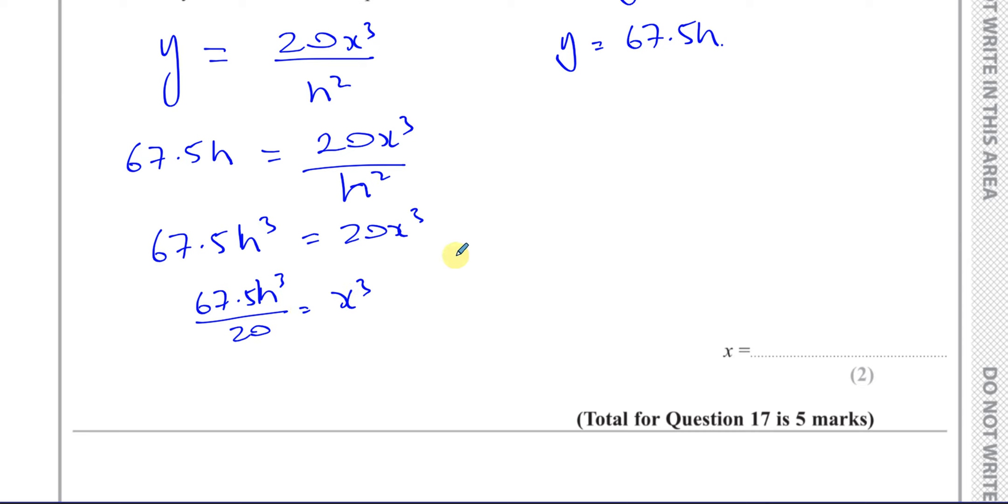67.5 over 20, what will that give us? Let's work that out. That's going to be 675 over 200. I think 25 goes into this, 25 goes into 600. 25 goes into 100 four times, so into 600 it goes another 6 times. That's 24. And then you've got another 3. So I think it's 27 over 8.